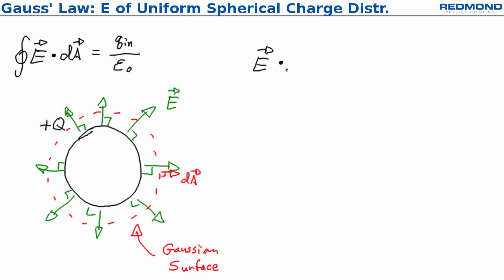So when I have that dot product of E dot dA, that simplifies, and I can express this as it would be E times dA times cosine of the angle theta between them. Because the area vectors dA are always perpendicular to the sphere and the electric field is always perpendicular to the sphere, that angle theta becomes zero degrees.